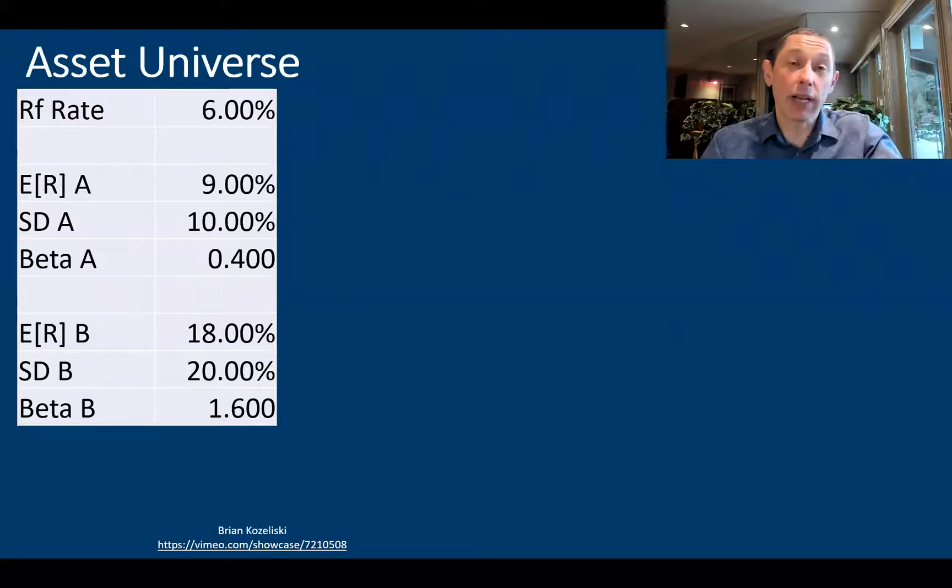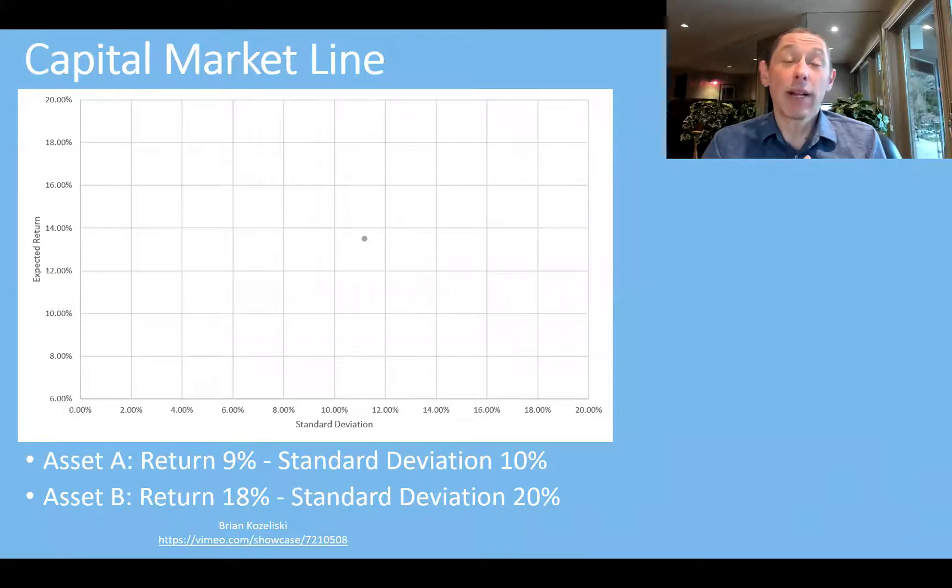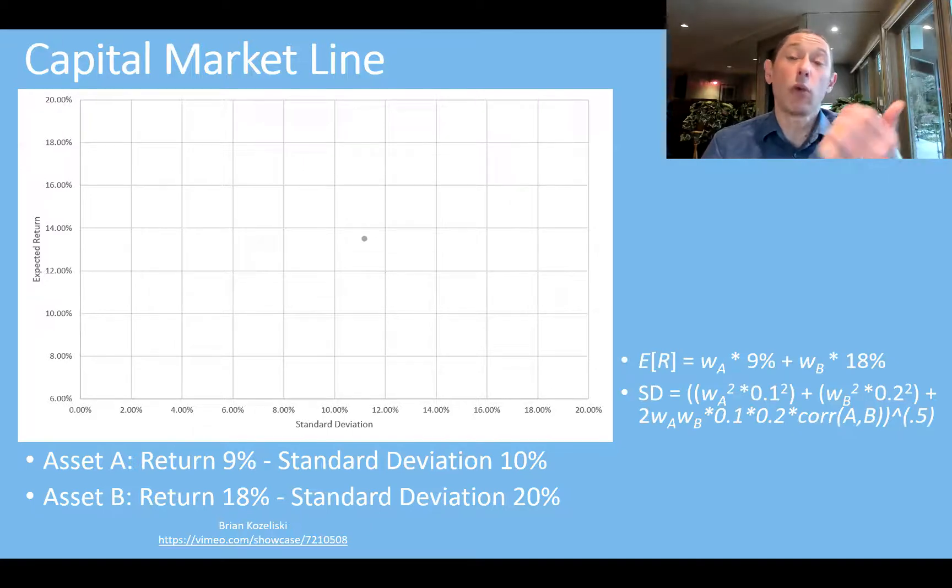Now, here's the assets we talked about before. I introduced here now a risk-free rate that's 6%. It's a little high, but this is contrived to give us an example. So now we're going to talk about the capital market line. So instead of beta as the measure of risk on that X axis, we are talking about standard deviation. So here we have those two assets, 9% return, 10% standard deviation, 18% return, 20% standard deviation. So the return is just going to be the weighted proportion of those two assets. The standard deviation is a little bit more complicated because there's a correlation term in here.